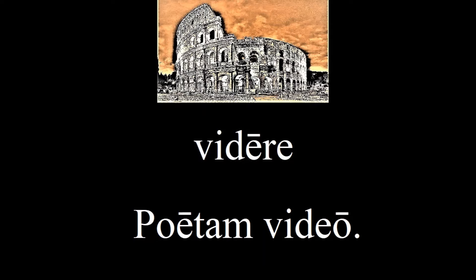A verb that allows us to make much use of our new noun forms is videre. This verb has roots in the words 'visual' and 'video.' Here it means 'to see.' So can you interpret this sentence: 'I see the poet'? Do you see why it's not 'the poet sees'? Because the -m added to poeta signifies that it's the object, and video is the conjugation for 'I see.'